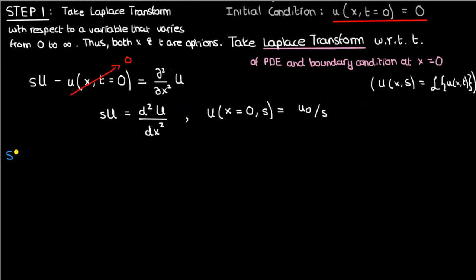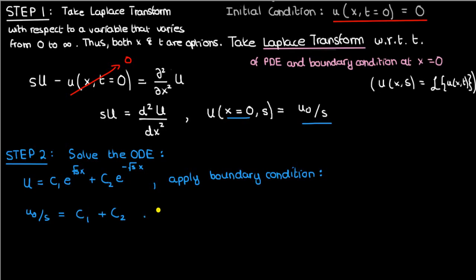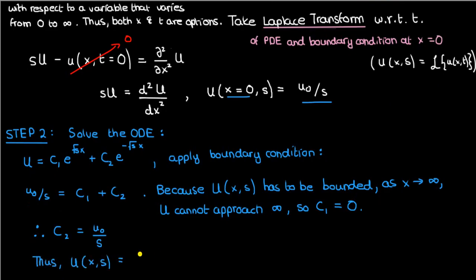Now let's solve this ODE. Since all derivatives are in terms of x, s can be treated as a constant. The general solution to this second-order ODE involves exponentials: c₁ times exp(√s · x) plus c₂ times exp(−√s · x). Applying the boundary condition at x equals 0 gives U₀/s equals c₁ plus c₂. In addition, capital U must remain bounded: as x approaches infinity, neither u nor its Laplace transform can become infinite — that would be unphysical. Therefore c₁ must be 0, which means c₂ equals U₀/s. The solution is capital U equals (U₀/s) times exp(−√s · x).